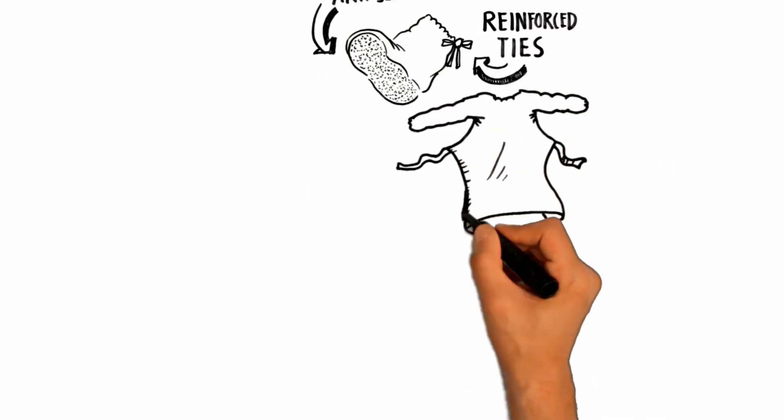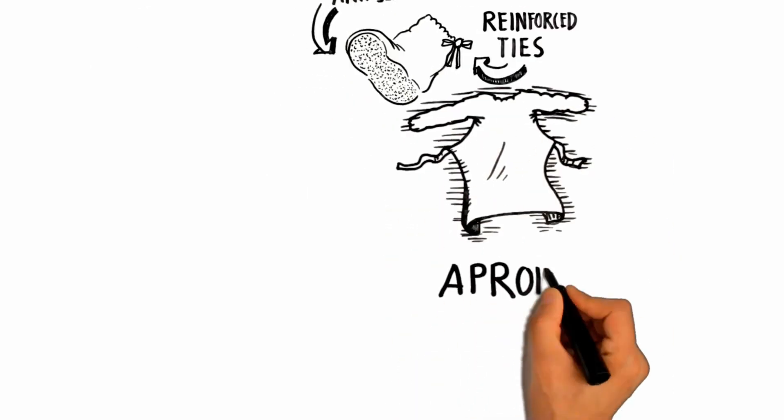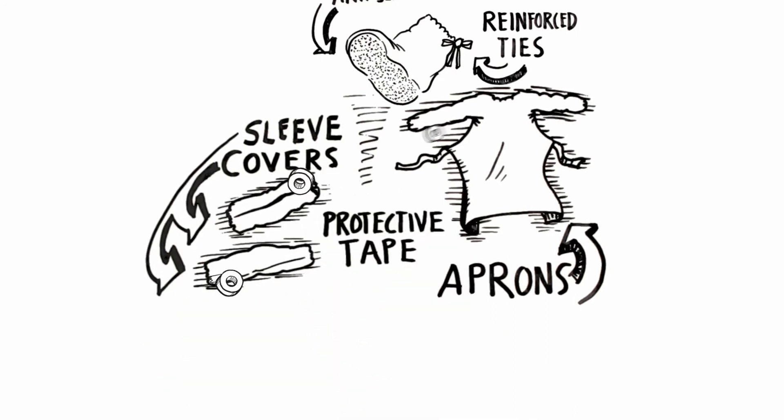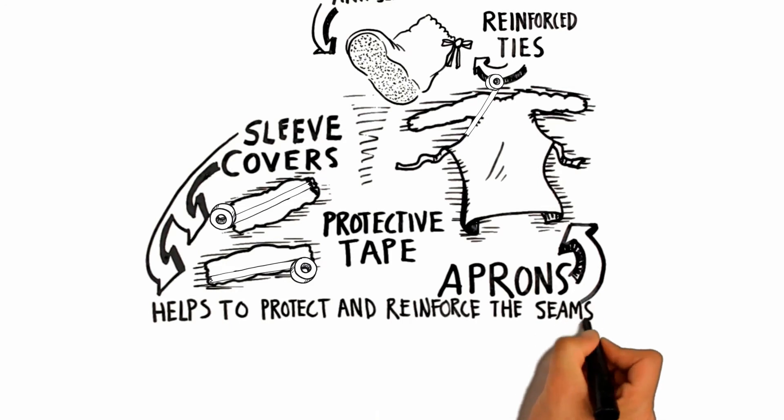Additionally, the seams on the BioClean C chemotherapy aprons and sleeve covers are overlaid with a protective tape which helps to protect and reinforce the seams.